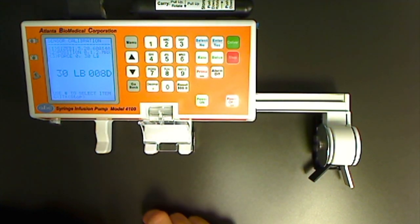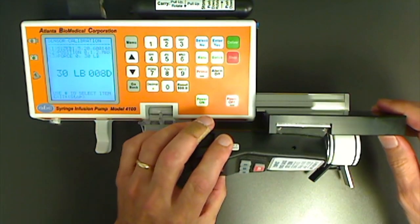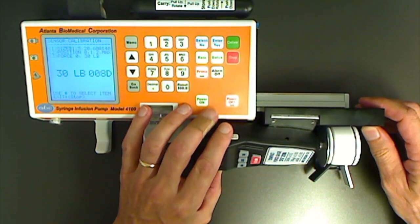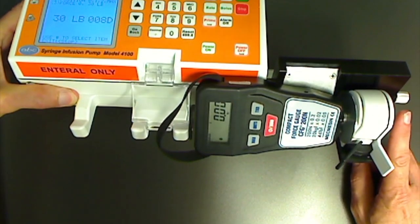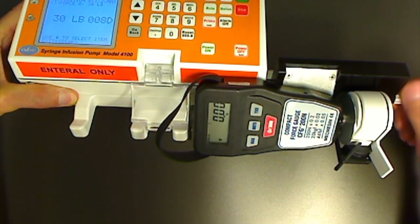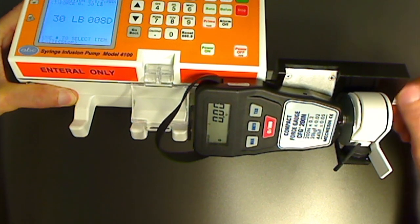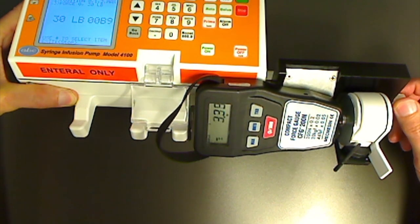Now notice the unit is indicating 30 pounds. Load the force gauge and fixture onto the track. Turn the knob on the fixture until 30 pounds is indicated on the gauge.